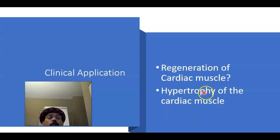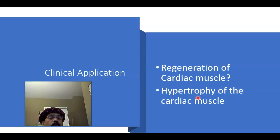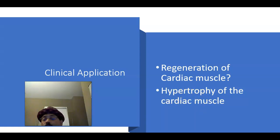Hypertrophy of the cardiac muscle occurs in hypertension or in any cause of increased peripheral vascular resistance. The ventricle attempts to pump blood against resistance and becomes hypertrophied — the size of the cell increases.